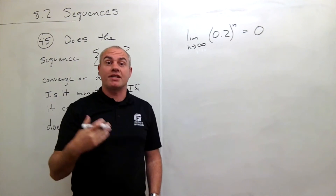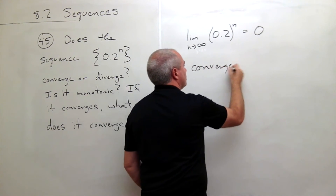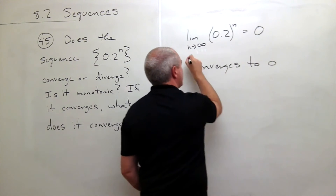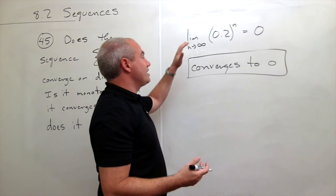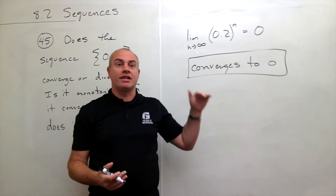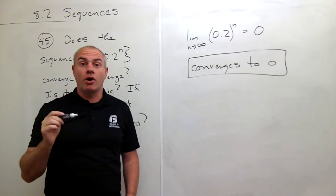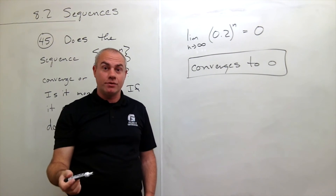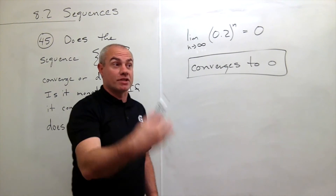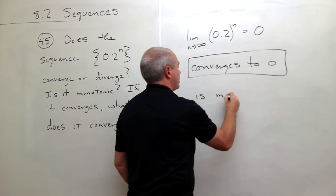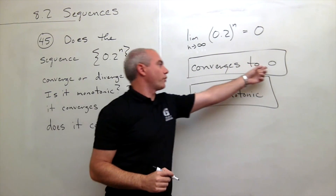So this thing converges to 0 — it converges, and 0 is what it converges to. The other question is: is it monotonic? That means is it continually getting smaller or continually getting bigger. We can see that 0.2 raised to the n is getting smaller every time: 0.2 times 0.2 is 0.04, times 0.2 is even smaller, times 0.2 is even smaller. So this is a monotonic sequence, and it converges to 0.